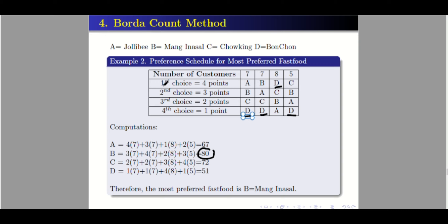If there are 5 choices, we assign points 5, 4, 3, 2, 1. If there are 6 choices, then 6, 5, 4, 3, 2, 1, and so on. The one with the highest total points is declared the winner.